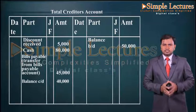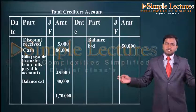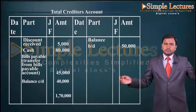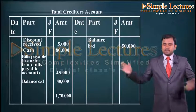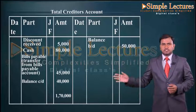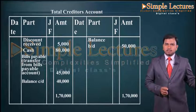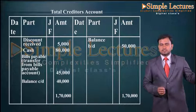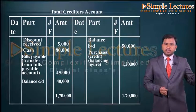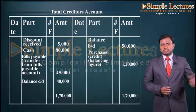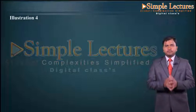By closing the account we find out the purchases. The debit side total is one lakh seventy thousand and the credit side total is fifty thousand. The debit side total of one lakh seventy thousand is also written on the credit side in the same line; one lakh seventy thousand minus the opening balance gives a difference of one lakh twenty thousand, which is nothing but purchases. In bracket you can write balancing figure.